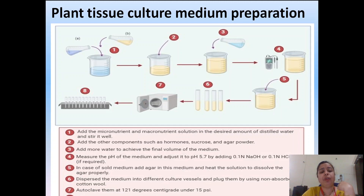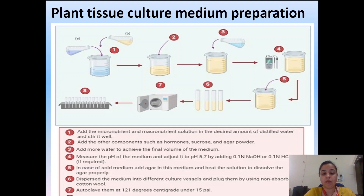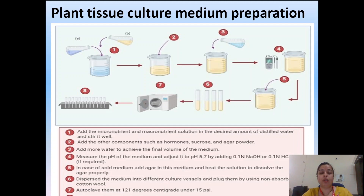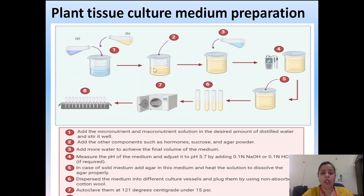When macronutrients and micronutrients are prepared in proper concentration, they are mixed in distilled water and volume is made up. Then in the second step, all other essential nutrients are added — growth hormones, amino acids, sucrose, and agar powder, which is the main medium in which all nutrients are added. After adding all nutrients one by one, in the third step the volume is made up with distilled water.